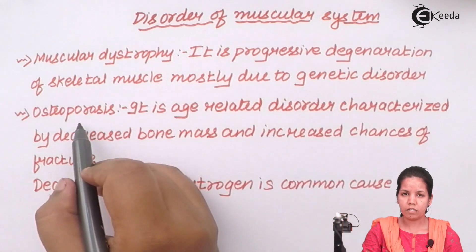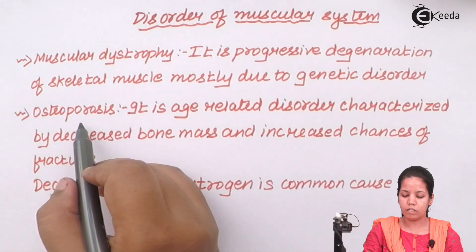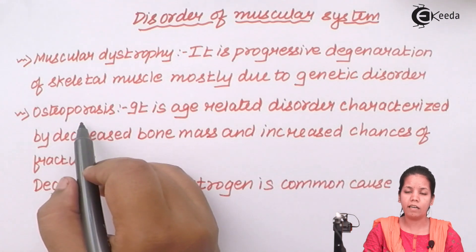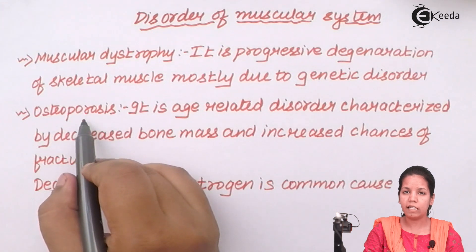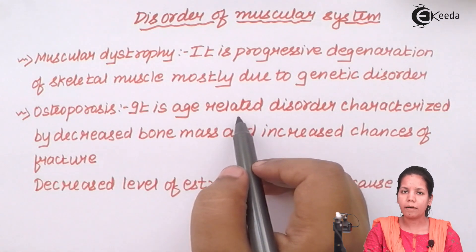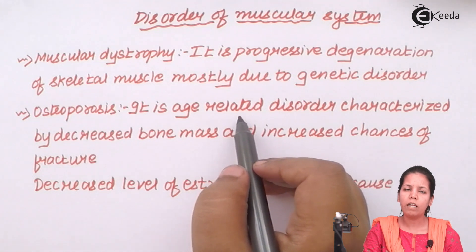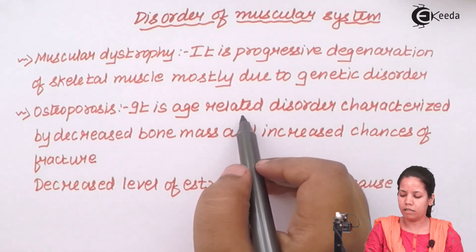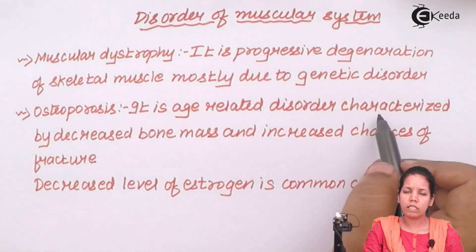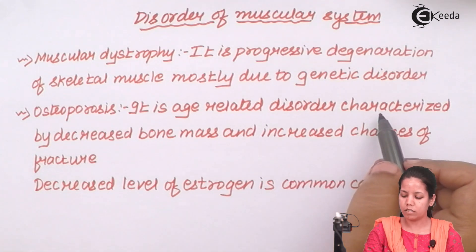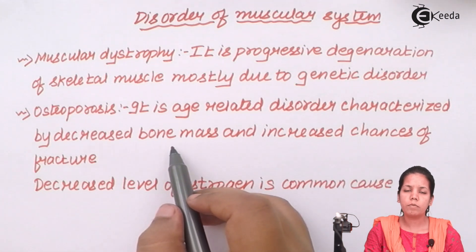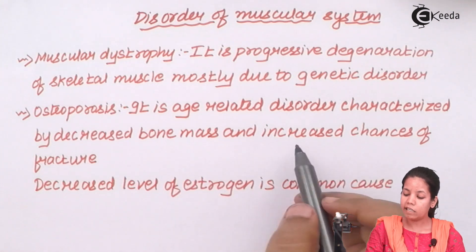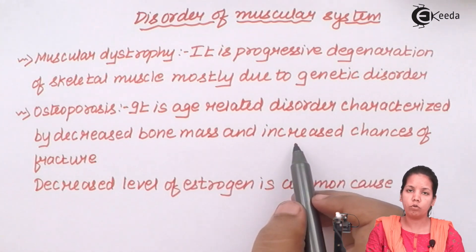The second muscular disorder very common in India is osteoporosis. Osteo means bones and porosis means leaking of bones. It is an age-related disorder that basically happens in women above the age group of 35 years. It is characterized by decreased bone mass, because the bones become porous and there is leakage or removal of calcium from them, leading to increased chances of fractures.